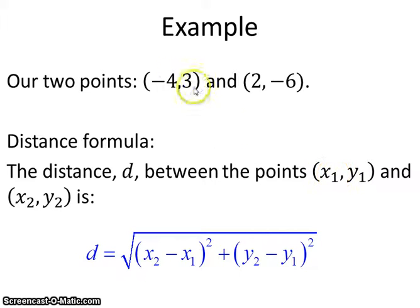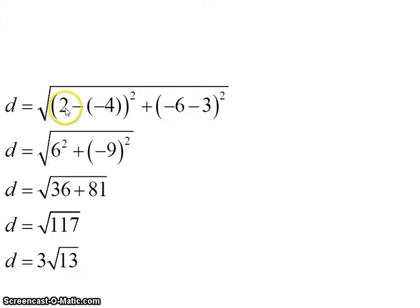So our x1, y1 is going to be negative 4, 3, and our x2, y2 is going to be 2, negative 6. So we're just going to plug in those values here. We have to remember that the minus signs are built into the formula, and we have to go ahead and put another minus sign if our point or our coordinate is also negative to make sure that we get the correct answer.